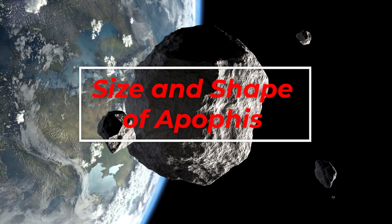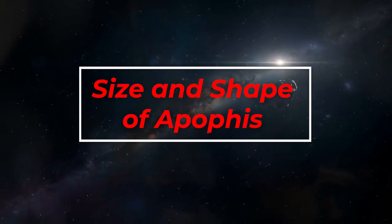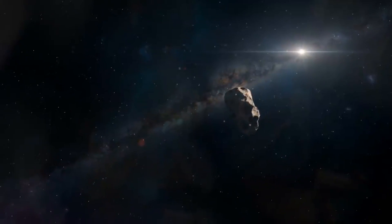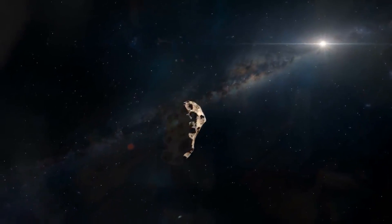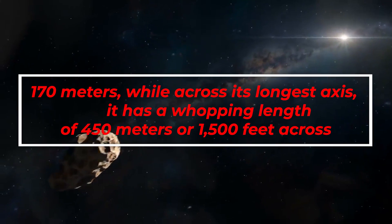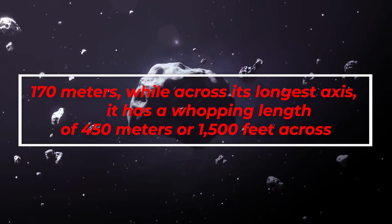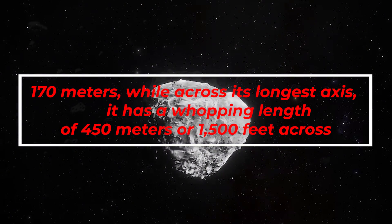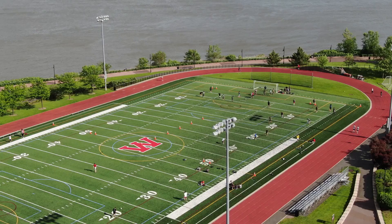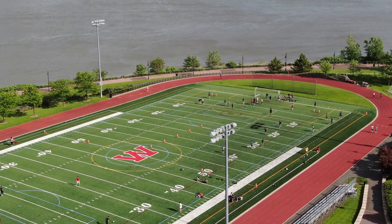The Apophis asteroid is a relatively big asteroid. Across its shortest axis, it measures 170 meters. While across its longest axis, it is a whopping length of 450 meters or 1,500 feet across. By comparison, this is like combining five football fields together.